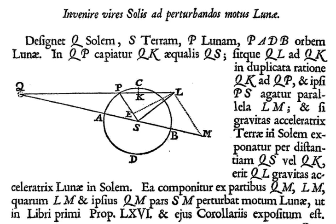Applications of lunar theory have included the following. In the 18th century, comparison between lunar theory and observation was used to test Newton's law of universal gravitation by the motion of the lunar apogee. In the 18th and 19th centuries, navigational tables based on lunar theory, initially in the nautical almanac, were much used for the determination of longitude at sea by the method of lunar distances.